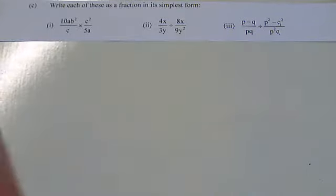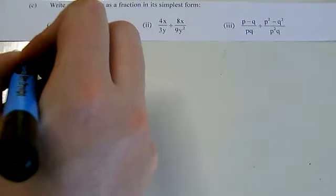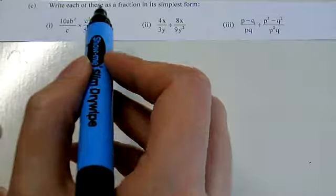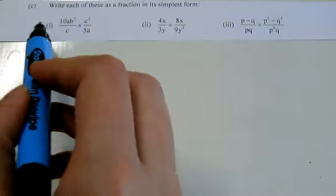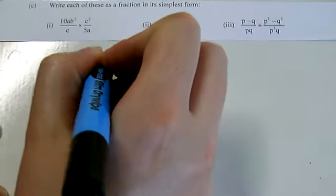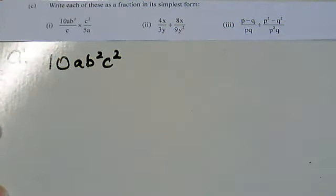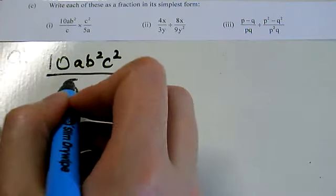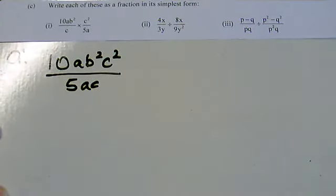Starting off with part i, looking at this, multiplying fractions, we multiply the tops, multiply the bottoms. So on the top I've got 10ab squared c squared, and on the bottom I've got 5ac, and I'm looking for factors that go into the top and go into the bottom.